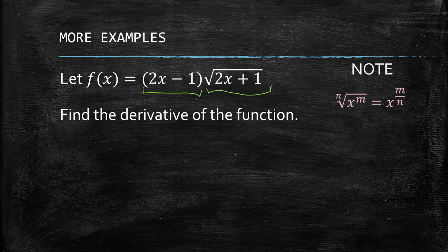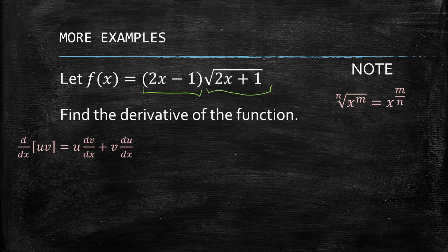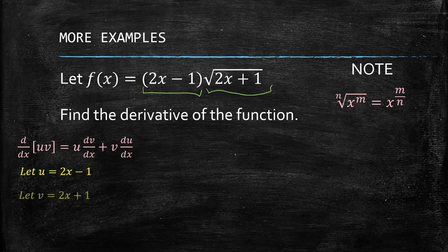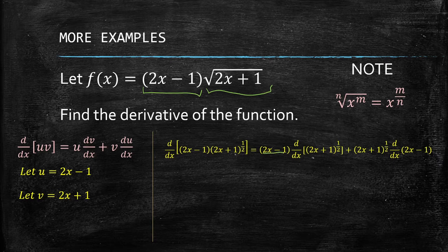We can rewrite the square root using a fractional exponent. Recall that the n-th root of x to the power m equals x to the power m/n. Since this is a product rule situation, we apply: u dv + v du. We let u = (2x - 1) and v = (2x + 1) raised to the power of 1/2. We substitute the u's and v's into the formula.